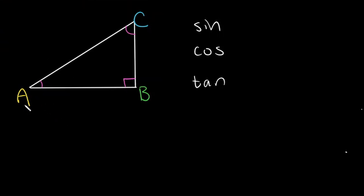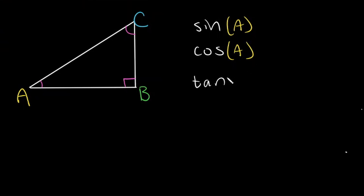We have our right triangle ABC here. Each letter corresponds to an angle. So if we take the sine of A, the cosine of A, and the tangent of A, what would these be equal to?